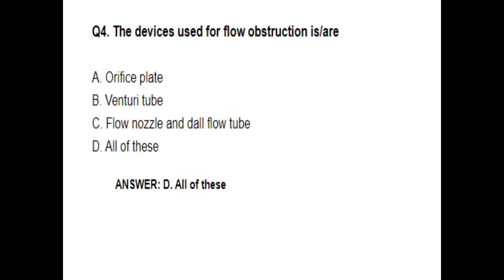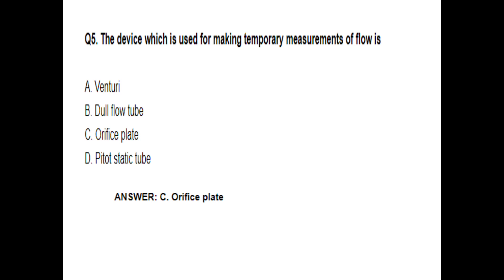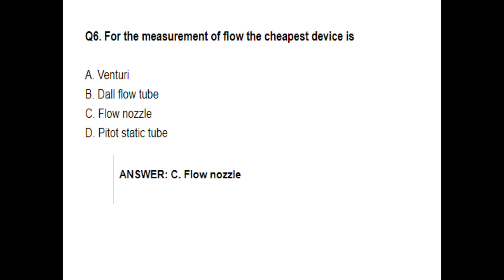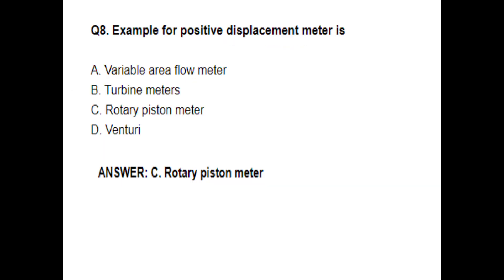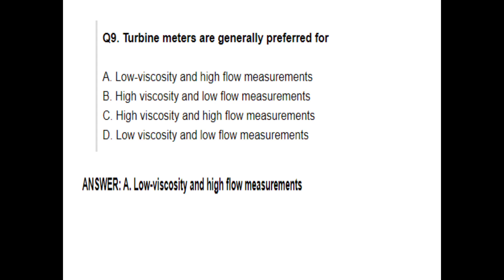The device used for the flow obstruction is orifice plate, venturi tube, flow nozzle, and dall flow tube. All of these are devices used for flow obstruction. The device which is used for making temporary measurement of flow is orifice plate.